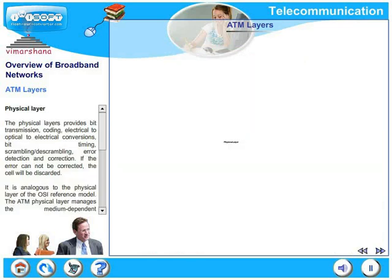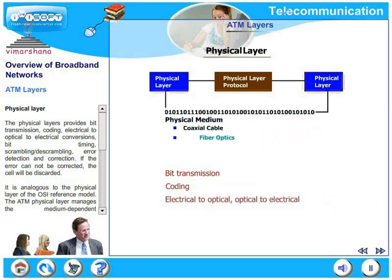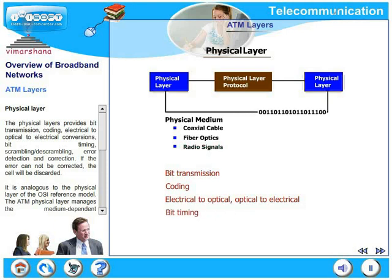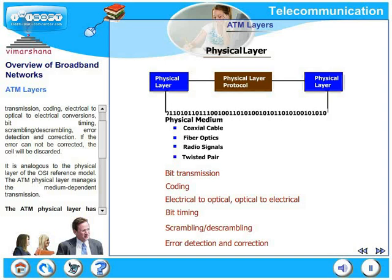What is the physical layer? The physical layer provides bit transmission, coding, electrical to optical and optical to electrical conversions, bit timing, scrambling, de-scrambling, error detection and error correction. If the error cannot be corrected, the cell will be discarded.